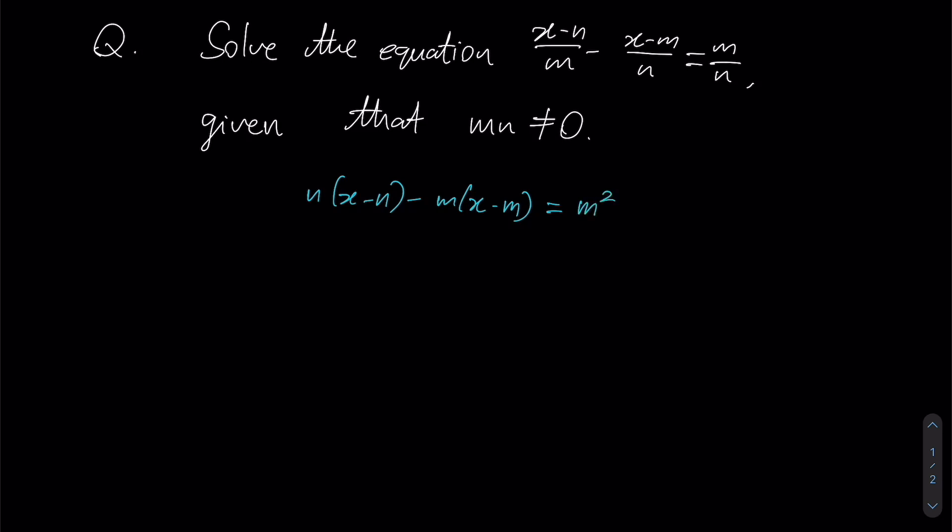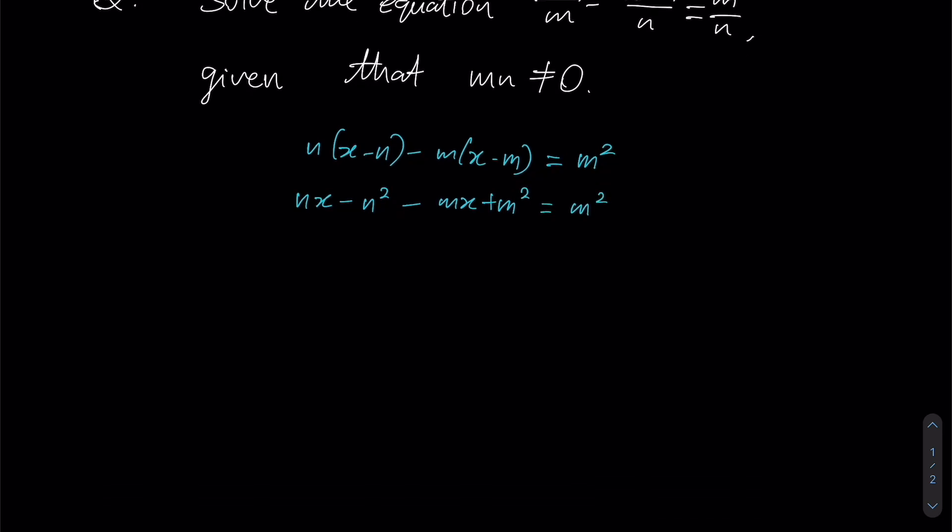Since we have brackets involving x, let us expand those. And this is what we should have. So first things first, let's try to eliminate any unnecessary constants. So we notice that m square is present on both sides, so therefore they will cancel each other out.